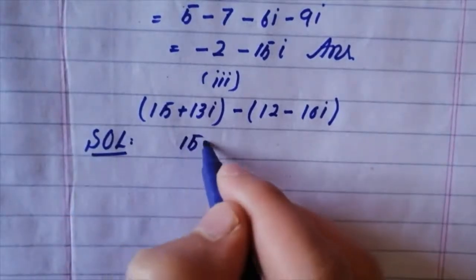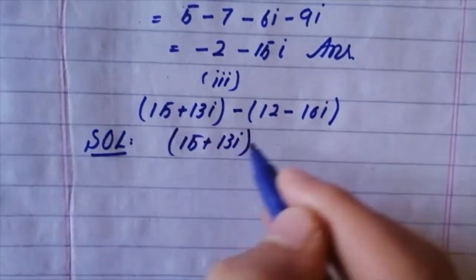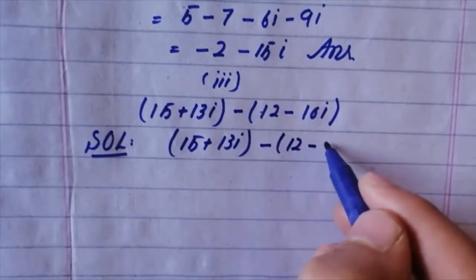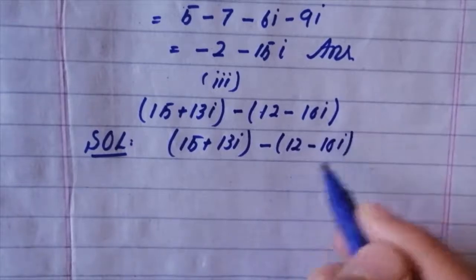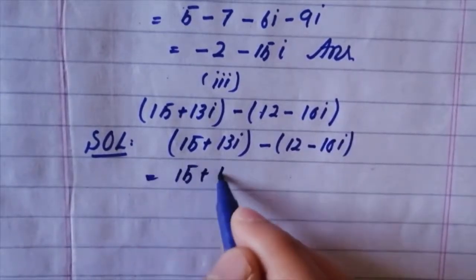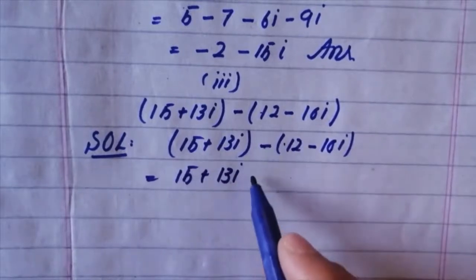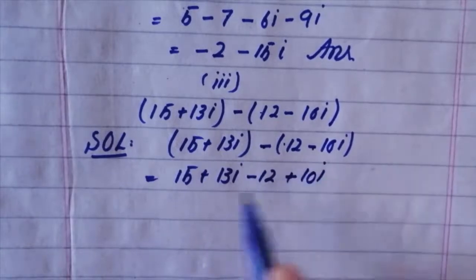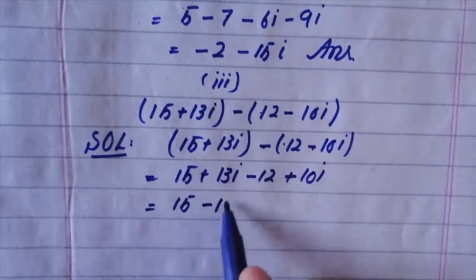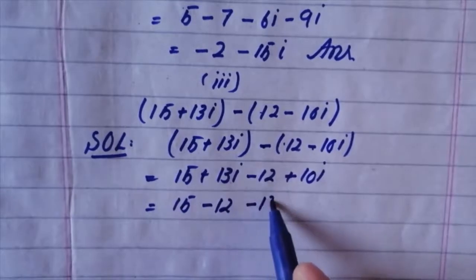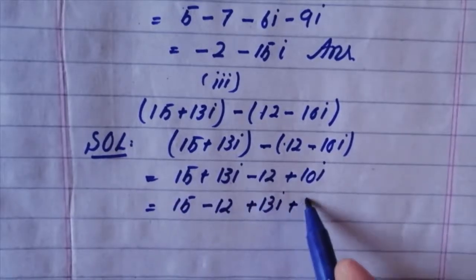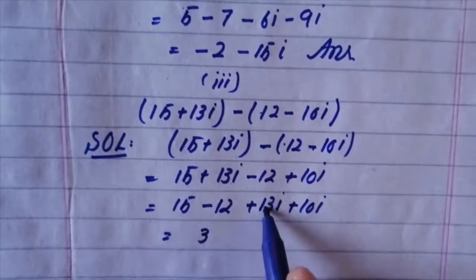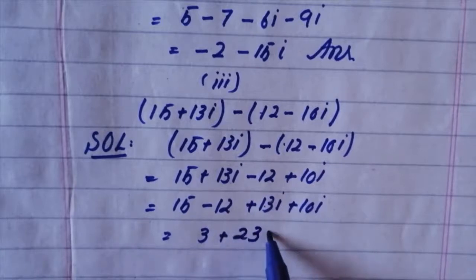Next part: We have terms with 6i and 10i, minus 3i plus 13i, minus into plus iota, minus 12, minus into minus plus 10i. Simplifying: 5 plus 13i minus 12i plus 10i. We get 15 minus 12 equals 3, and 13 plus 10 equals 23i. Answer: 3 + 23i.